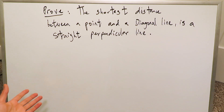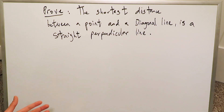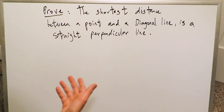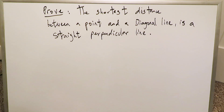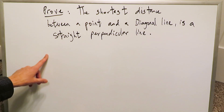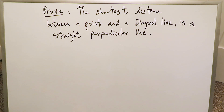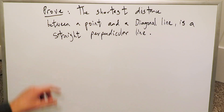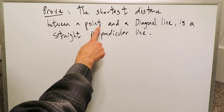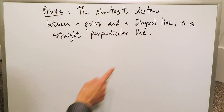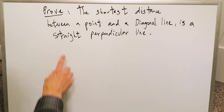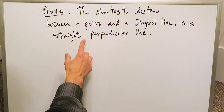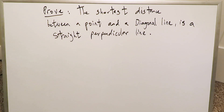We have something here on the surface which would seem rather intuitive, or you would think that it's obvious what the point of doing something like this would be. But in essence it's a worthwhile exercise. We have to prove the shortest distance between a point and a diagonal line is always a straight perpendicular line.